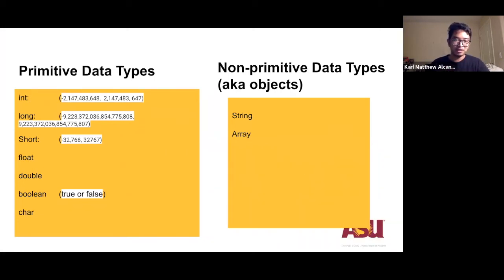So first off, there's the primitive data type. This is like the bread and butter of the data types, the simplest kind of form of data that you can have in Java.